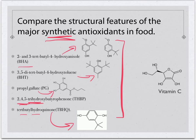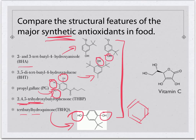We can generalize that all of these synthetic antioxidants have a benzene ring and alcohol groups. One of them has an ester group, and up here we have an ether group within that carbon chain. So the big structural features are benzene rings and alcohol groups — that's the key feature of synthetic antioxidants.